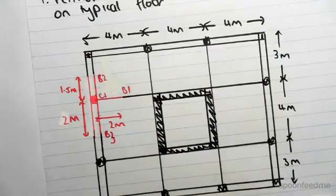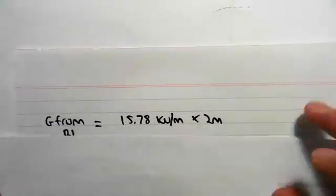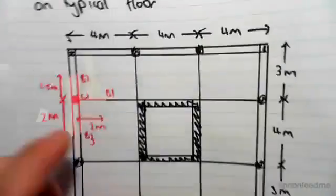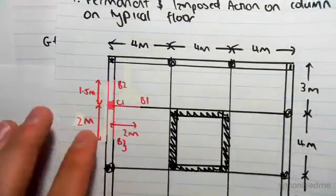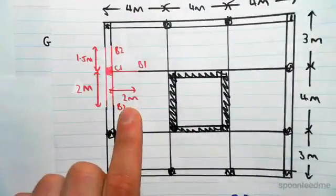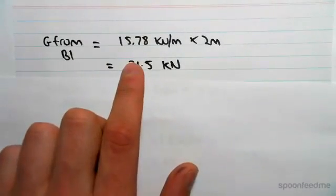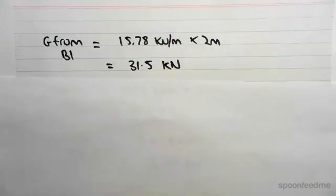So let's work this out now. The dead load from beam 1. We're going to multiply the UDL we found by the length 2 meters, and that will give us a point load. So we found a UDL of 5.78 kilonewtons per meter for B1, the interior beam.